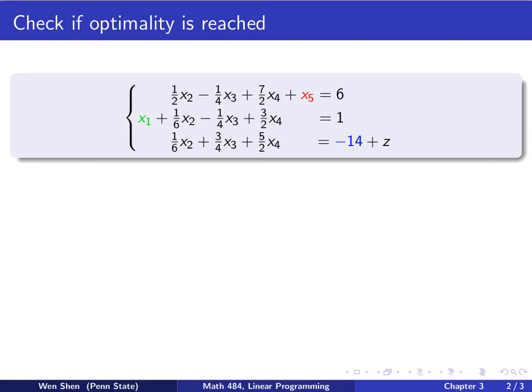Now we are reaching a point where we could check if optimality is reached. So here on the board, I put the canonical form of after the previous step at the basic solution 1 for x1, and then 0, 0, 0 for 2, 3, and 4, and 6 for x5, and z is 14.